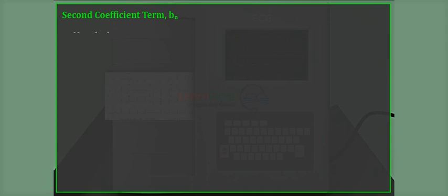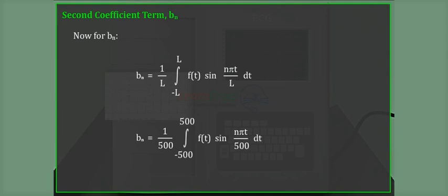Second coefficient term bₙ. Now for bₙ: bₙ equals 1 divided by L, integral from minus L to L of f(t) times sin(nπt divided by L) dt. bₙ equals 1 divided by 500, integral from minus 500 to plus 500 of f(t) times sin(nπt divided by 500) dt.